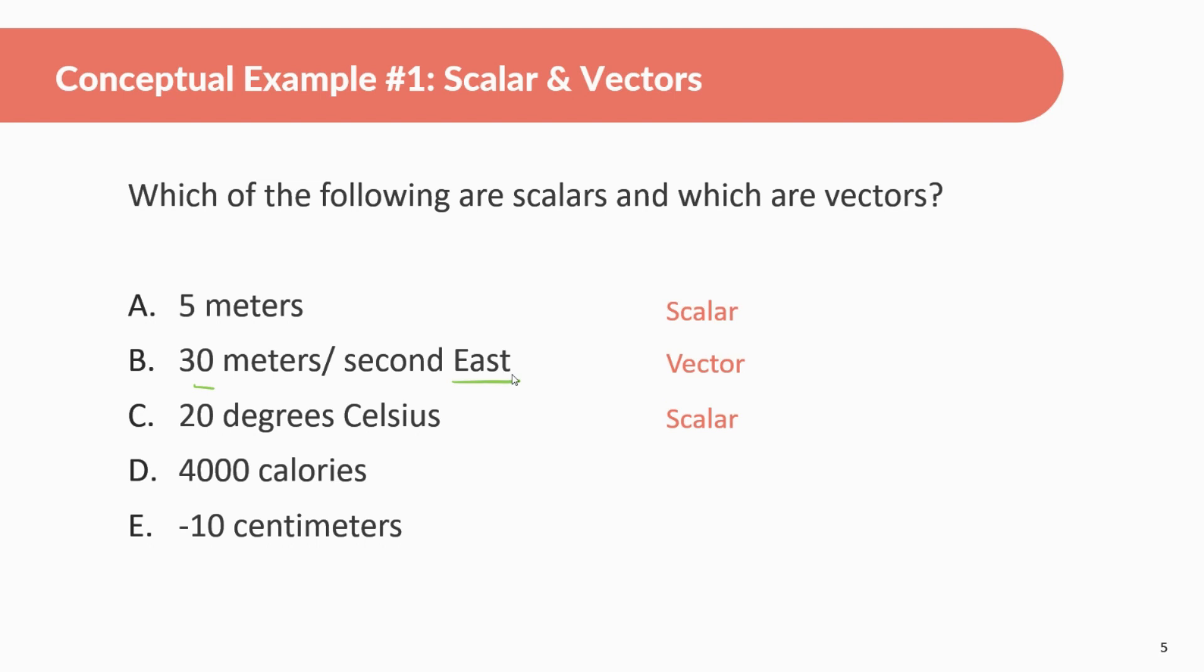4,000 calories. Again, maybe we could think about it direction, something getting bigger or smaller or whatever. However, it doesn't have direction. It just is what it is. Scalar. Negative 10 centimeters. It's a strange one. So this one actually is a vector. And the reason why it is a vector is this negative here implies a certain direction. A lot of times this negative implies either going to left, going down, either something's going west or south, but a lot of times this negative implies a certain direction.